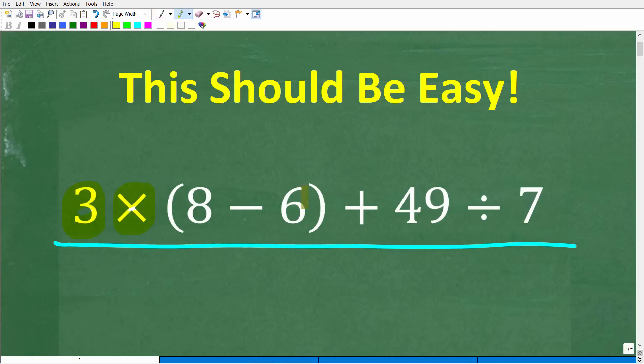So let's take a look at the problem. We have 3 times 8 minus 6 in parentheses plus 49 divided by 7. So once again, no calculators, but if you have an answer, go ahead and put that into the comment section.